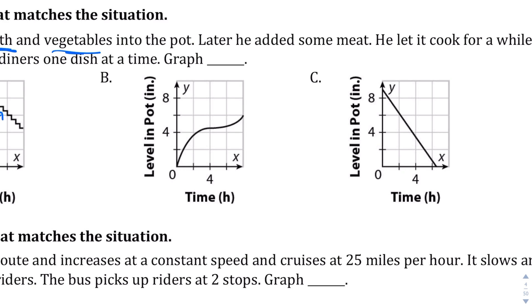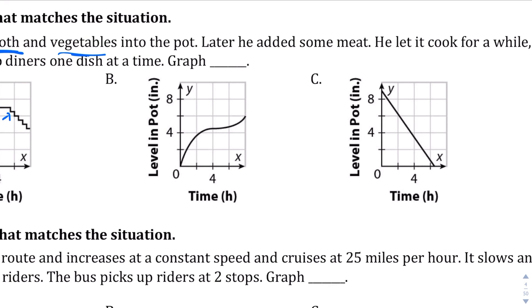And after you don't do that, the level should level out. And there's no part in graph B where it levels out. And definitely there's no part in this where he's serving it to diners one dish at a time.